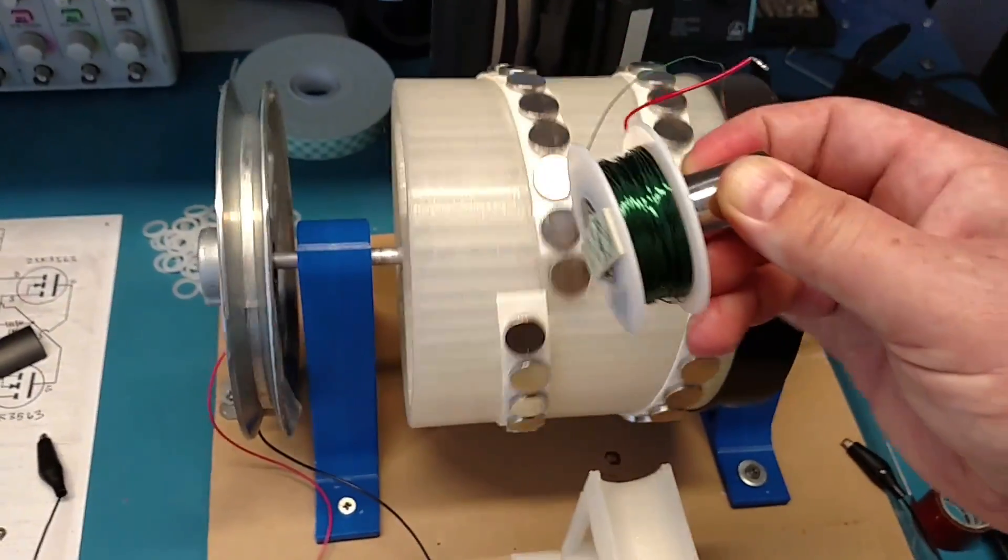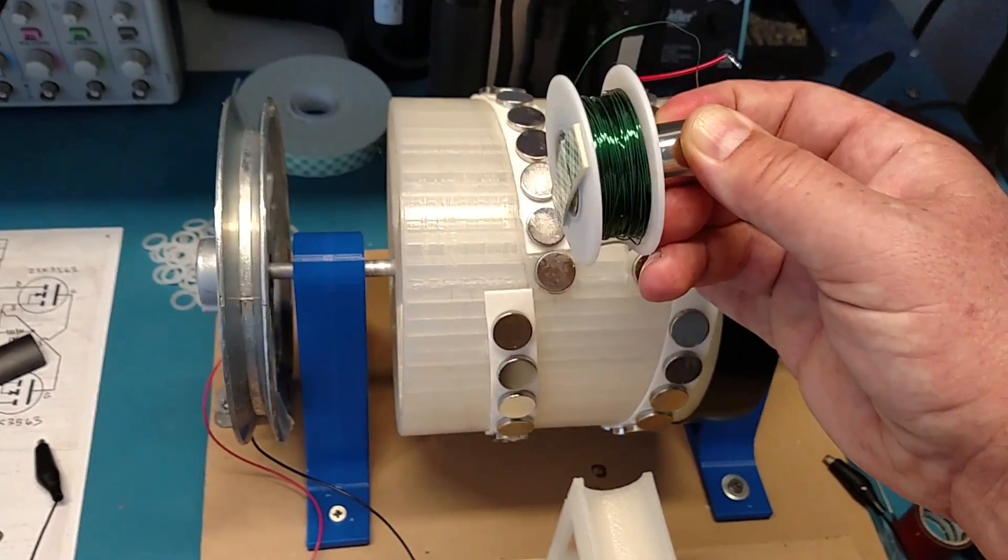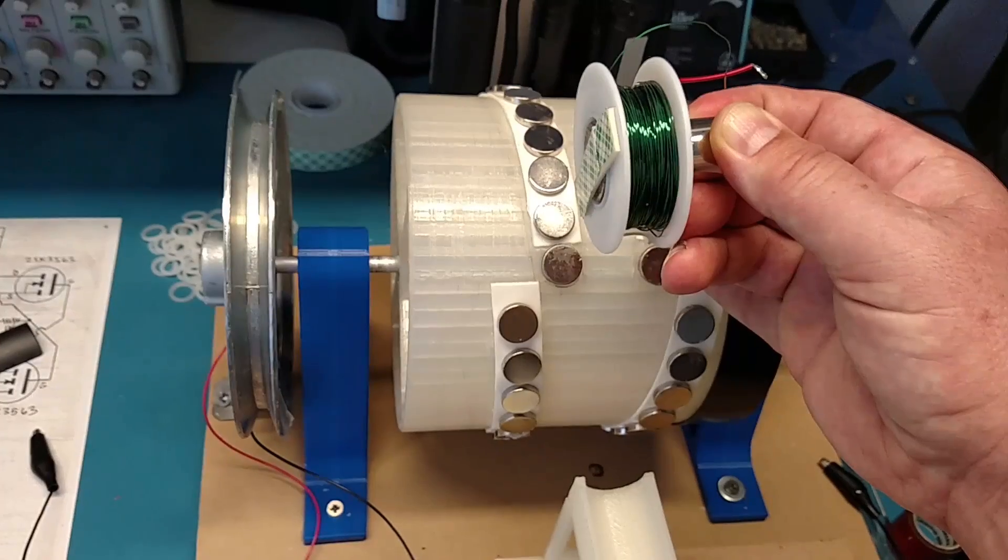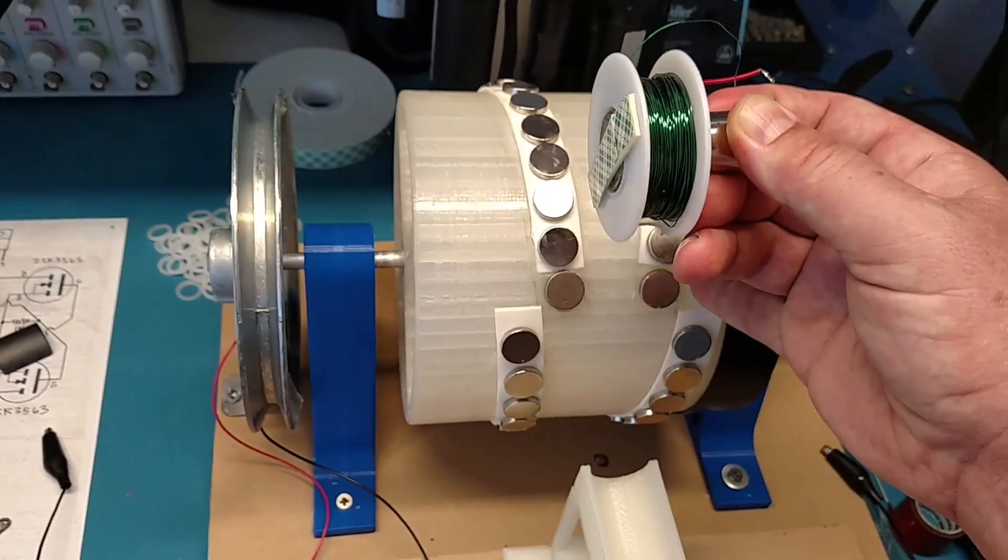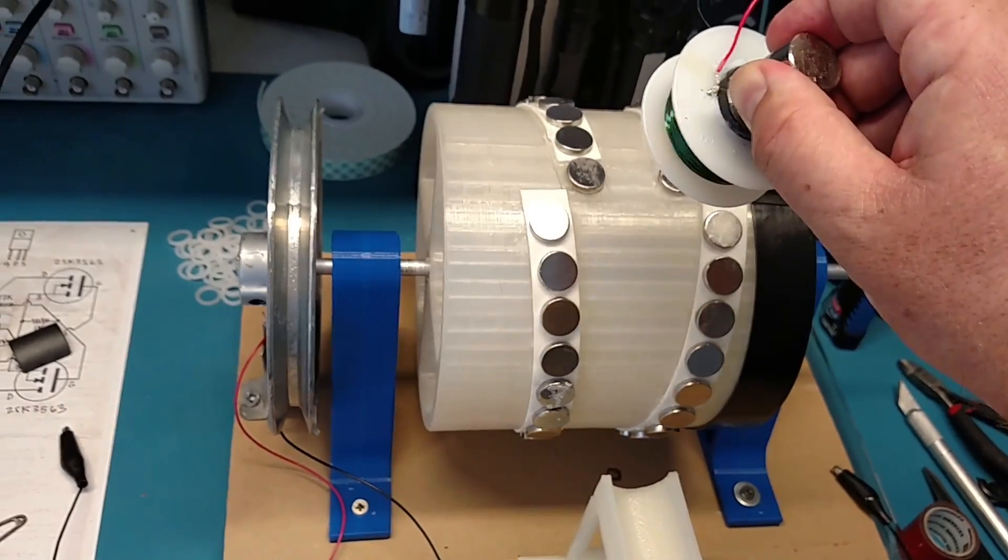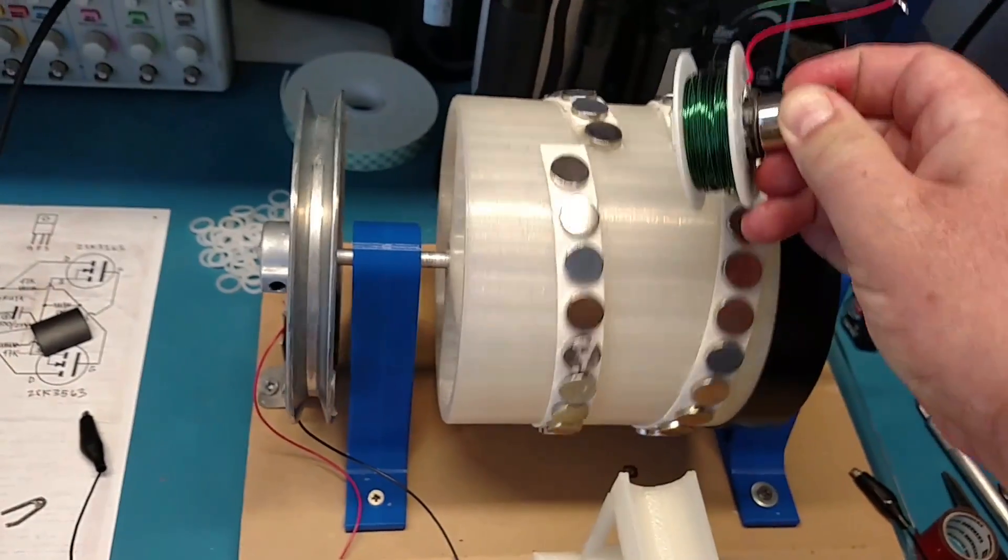So it can spin freely past what would normally be a high resistance area for a permanent magnet trying to pass through the gate. So now there's no resistance for the magnet to go through the gate because the magnetic field is shielded or neutralized.